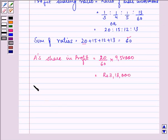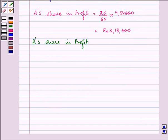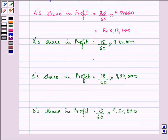Now, similarly, we can find out B's share in profit and on calculating, we have the answer as Rs. 2,38,500.